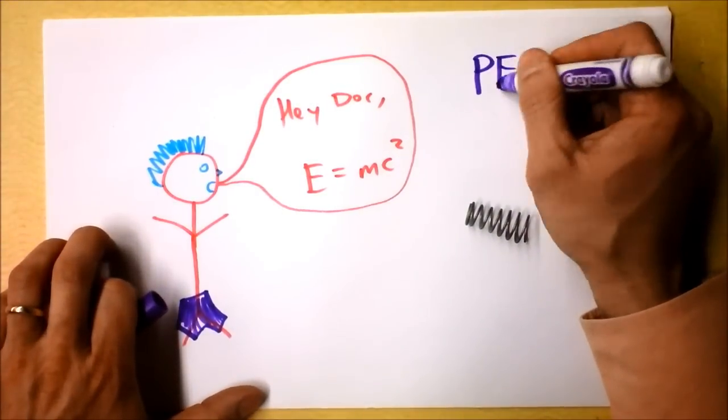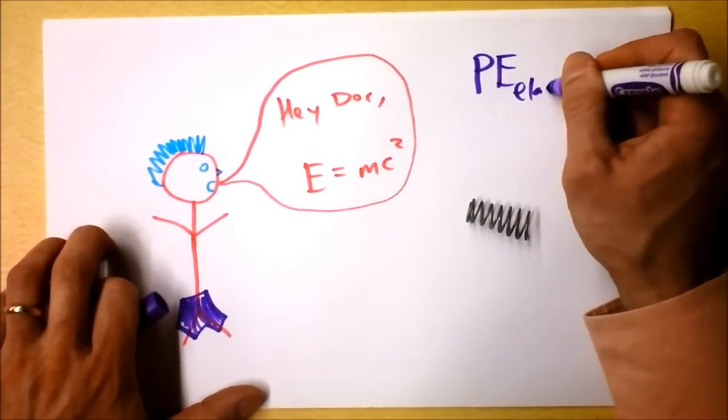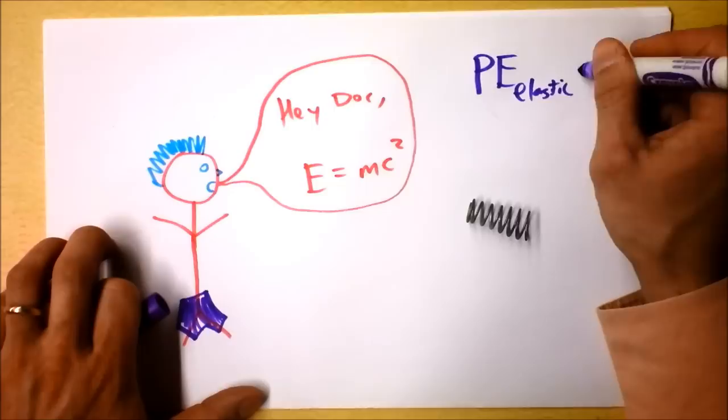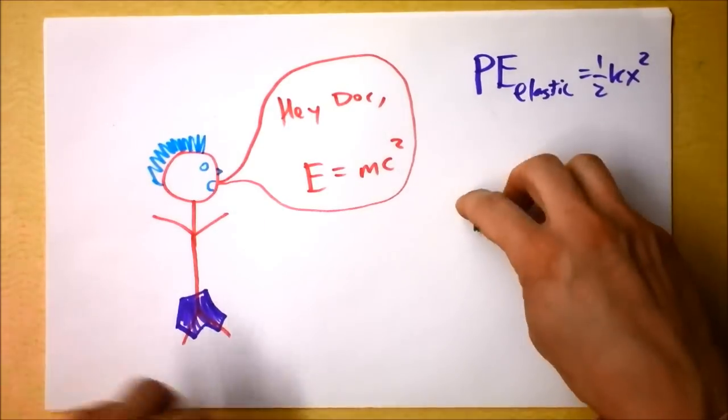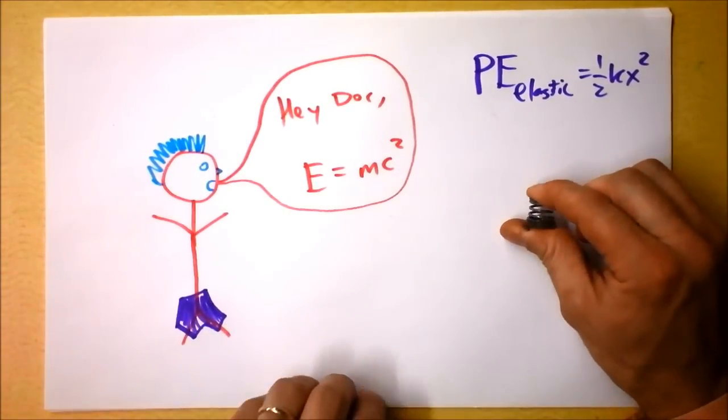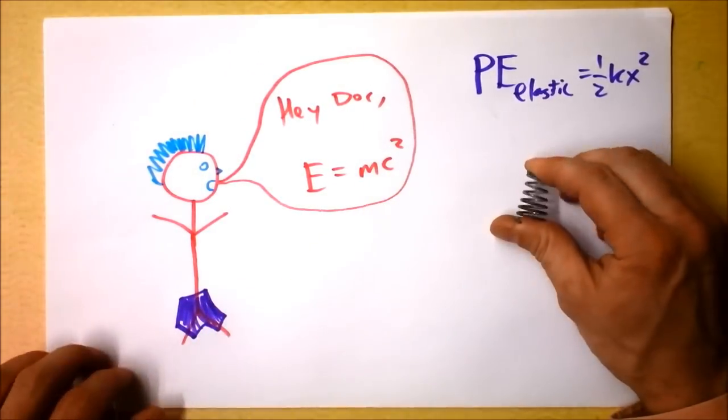We could say that the potential energy, you want to call it an elastic potential energy, it's just going to be one half the spring constant times how much I've compressed that sucker. Certainly does have more energy in it. But if E is MC squared, does that mean it has more mass?